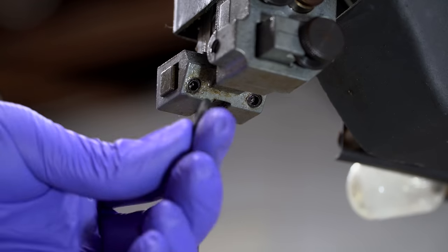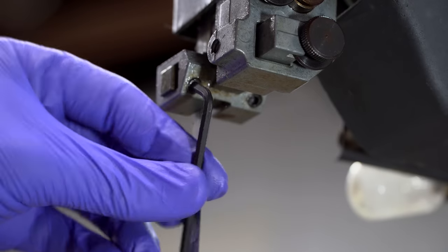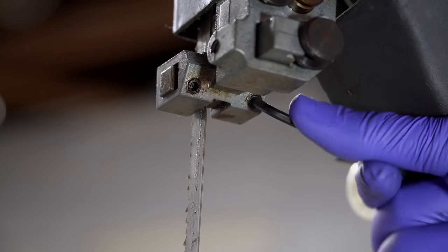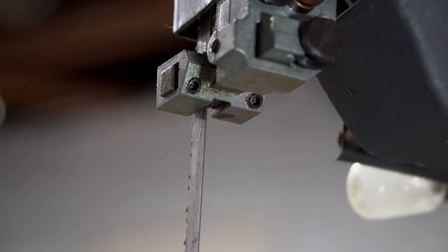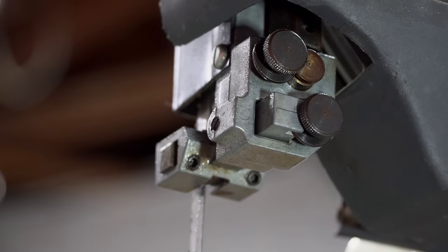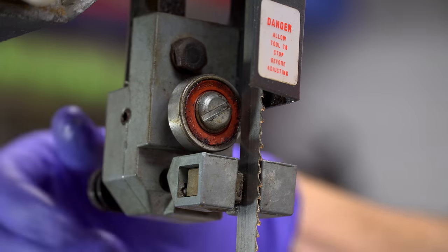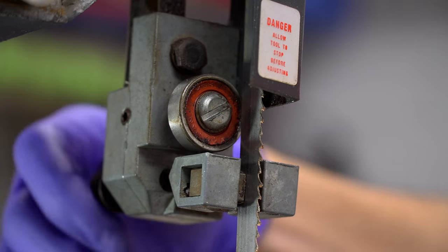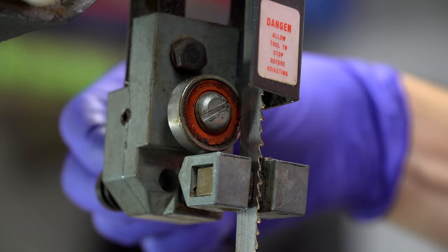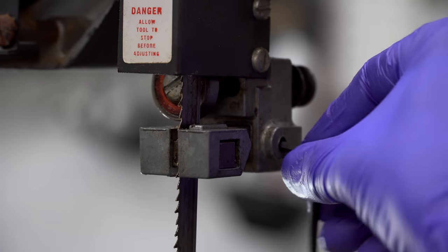These two screws on the backside of the blade guide assembly lock the blade guides themselves in place. Loosening these will allow you to adjust the blade guides. And this screw on the outside of the assembly locks the blade guide assembly's depth knob. Turning the knob moves the assembly either forwards or backwards. You want the blade guides to be close to the teeth of the blade, but not touching them. When you've got it in the correct position, tighten the set screw.